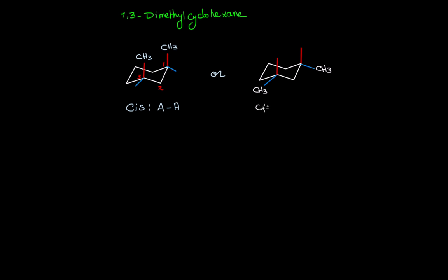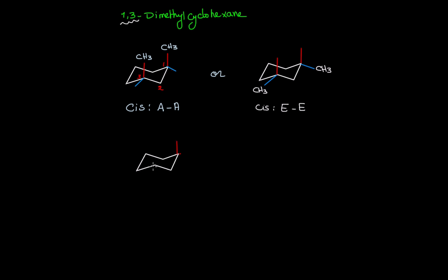So for 1,3-dimethylcyclohexane, the cis isomer is equatorial-equatorial in the flipped chair. This is the main reason why you should not think axial and equatorial when assigning cis and trans — it depends on the position of your substituents. The case of 1,2 is different from the case of 1,3.